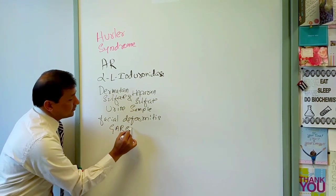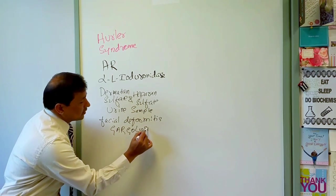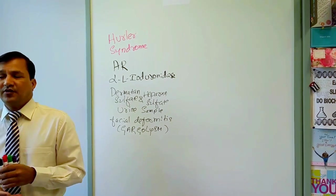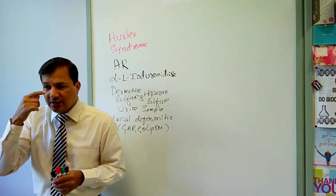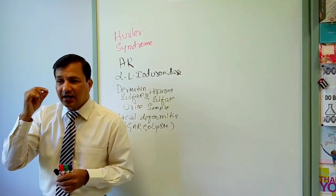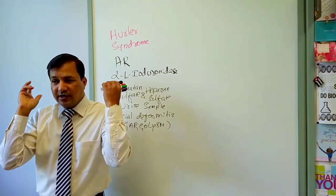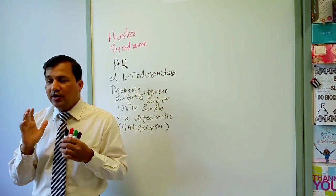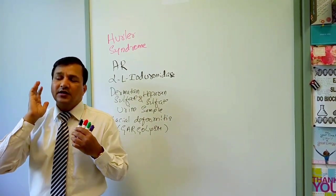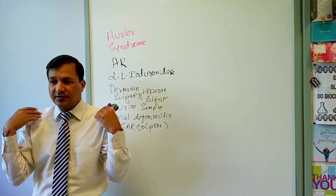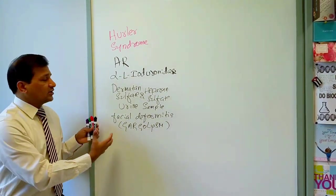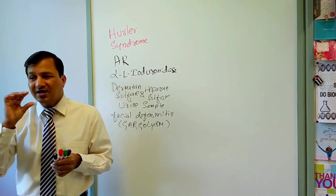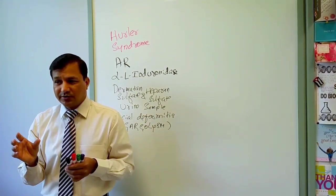In Hurler syndrome there will be facial deformities, sometimes referred to as gargoylism. Dysmorphic facial features include depressed nasal bridge — saddle nose deformity — everted ears, bossing of the frontal bone, short neck, and a thick partially open mouth.